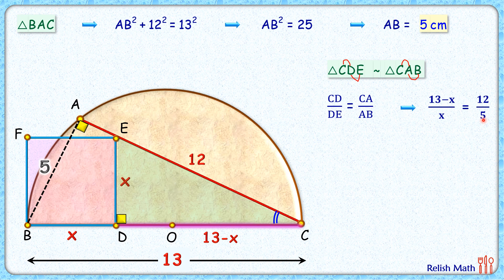Solving it by cross multiplication, we'll get 13 × 5 = 65 - 5x equals 12x, or 17x = 65, and x will be 65/17 or 3.82 cm.